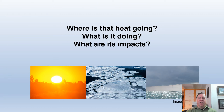Let's talk about those consequences. Where is this extra heat going, and what are its impacts? Some of the heat is going into the air, some is going into the oceans, some of it is melting ice, and some is evaporating water. These different pathways create different effects.